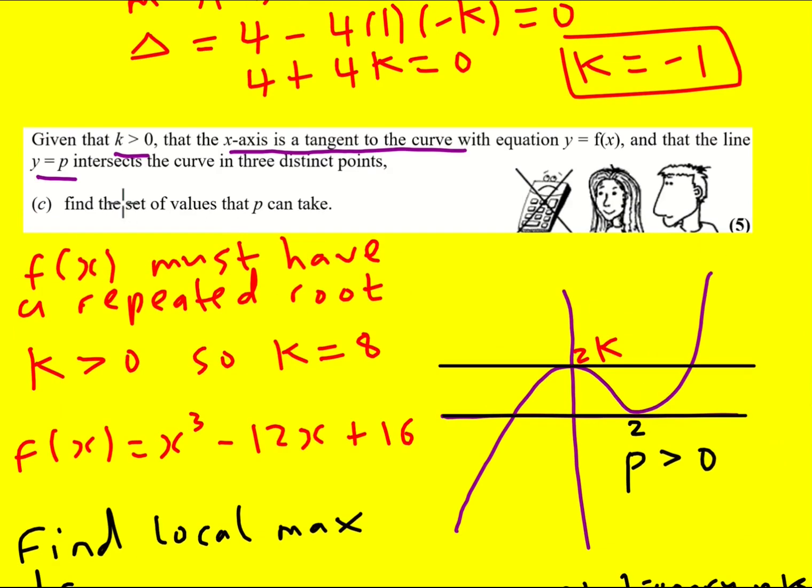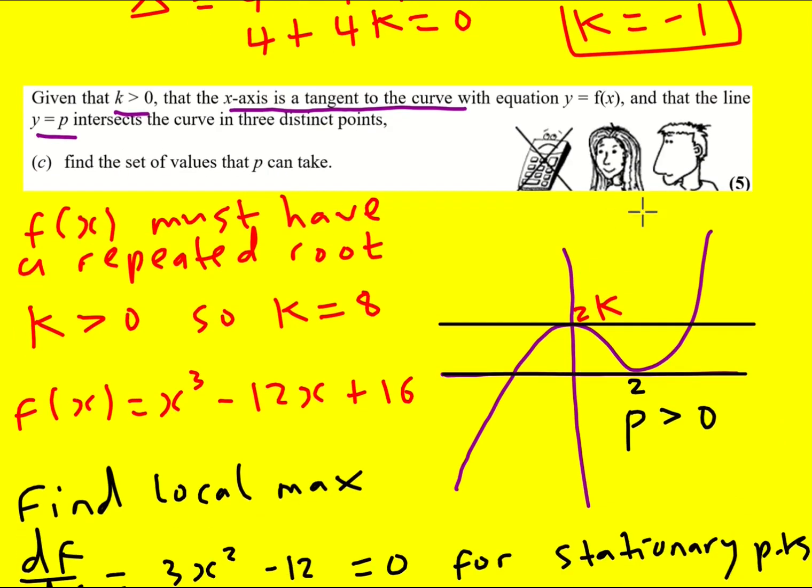And we're basically done. Find the set of values that p can take: it must be that p is bigger than 0 but less than 32. Okay, brilliant.